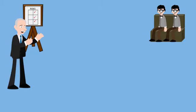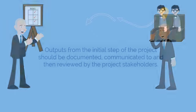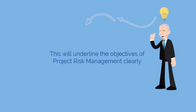Fifth, the outputs from the internal step of the project should be documented, communicated to, and then reviewed by the project stakeholders. This will underline the objectives of project risk management clearly.